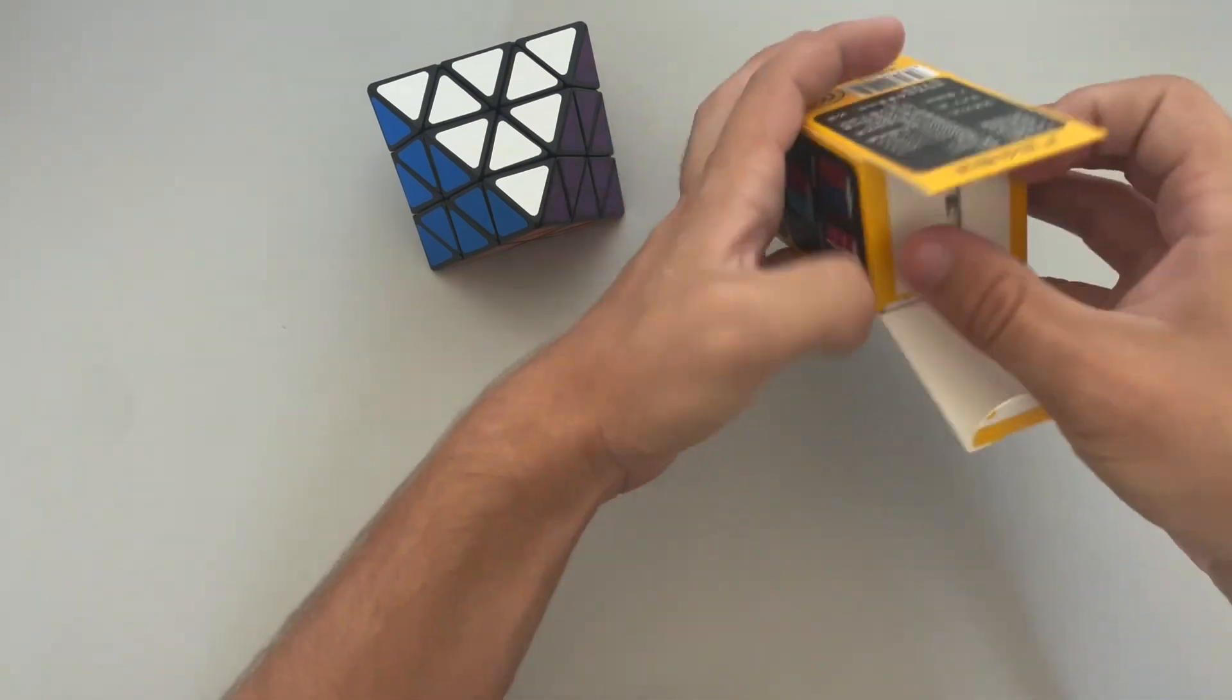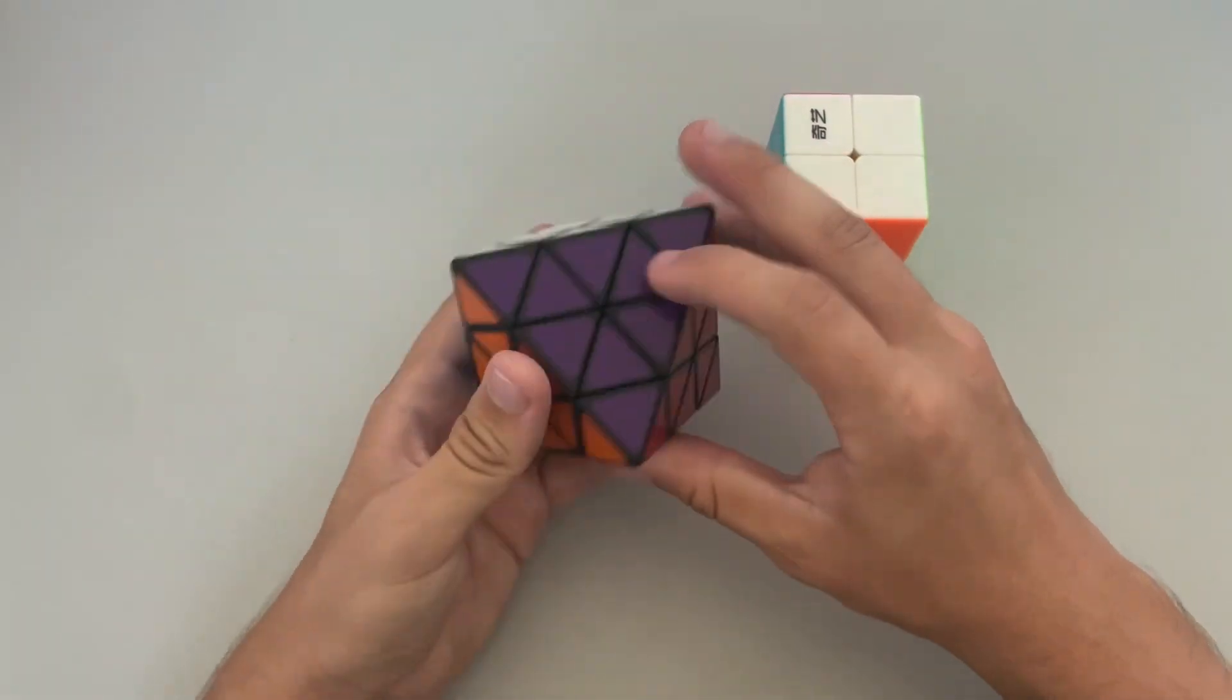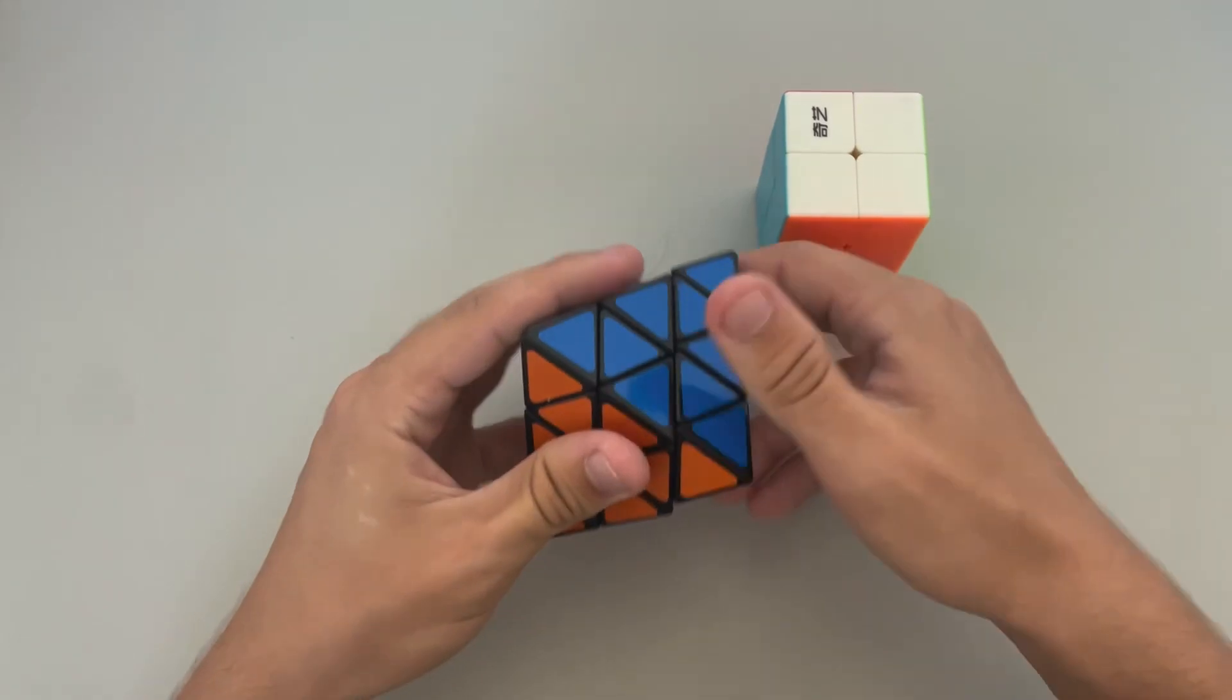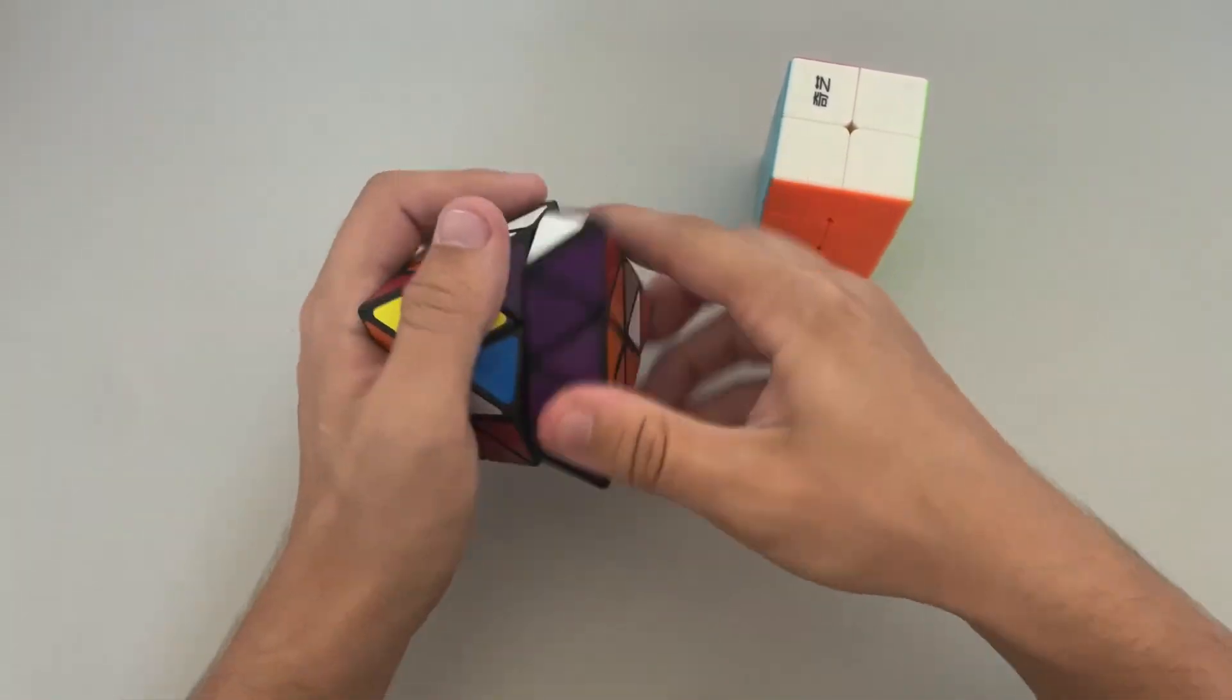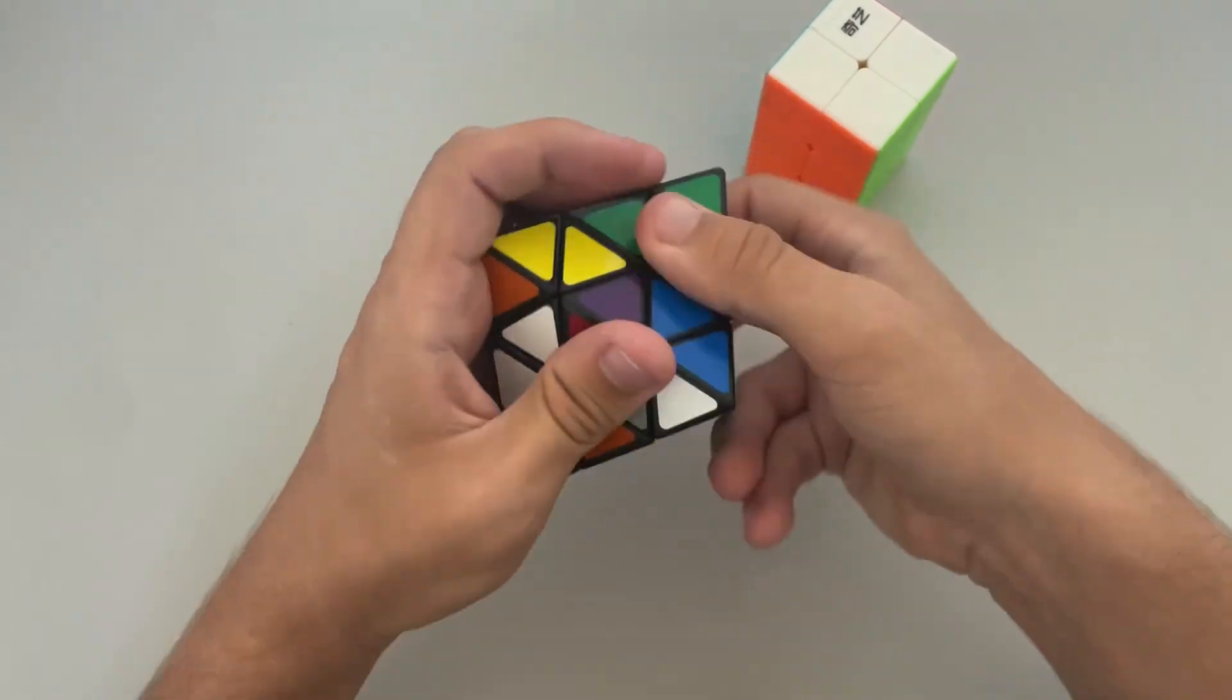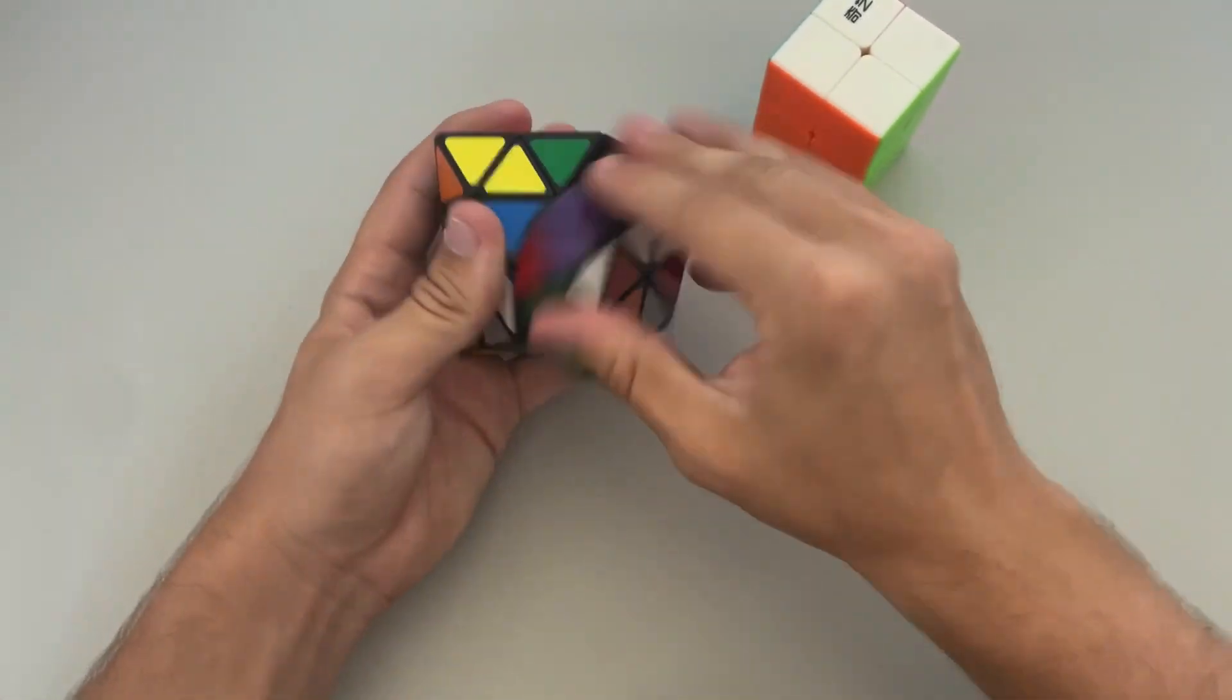And then as for the 2x2x3, I already have this one as well, but not in stickerless. So I'm going to go ahead and scramble them both up. Actually, no, let me show you the turning first. So I know how to solve both of these puzzles already. So I'm just going to go ahead and scramble them both up and solve them real quick. This should not be very difficult, although I'm definitely not going to be able to solve this in 15 seconds, like the world record.